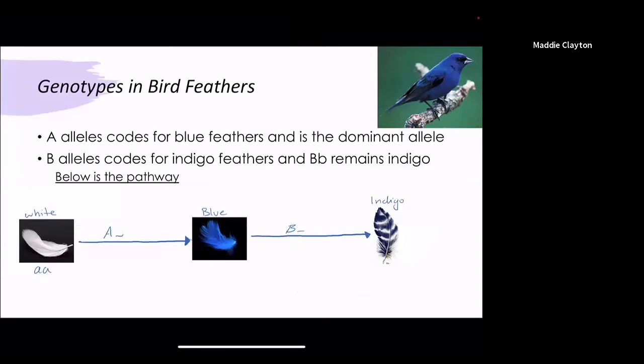An example of this is genotypes in bird feathers. In this specific species we have blue feathers, indigo feathers, and albino.